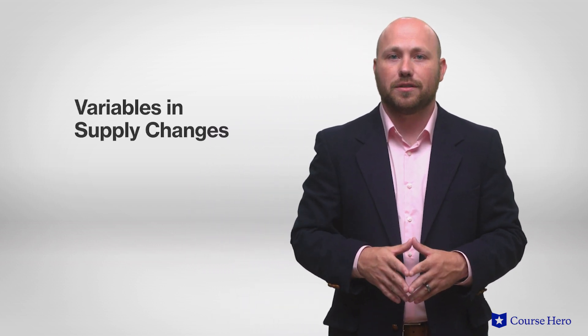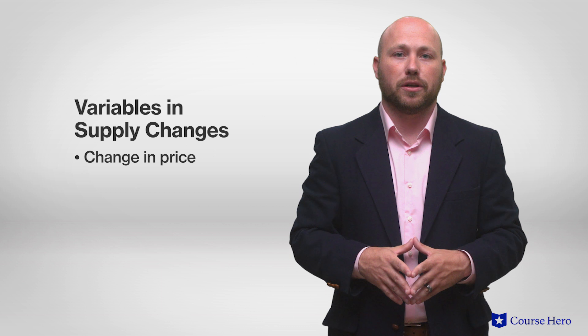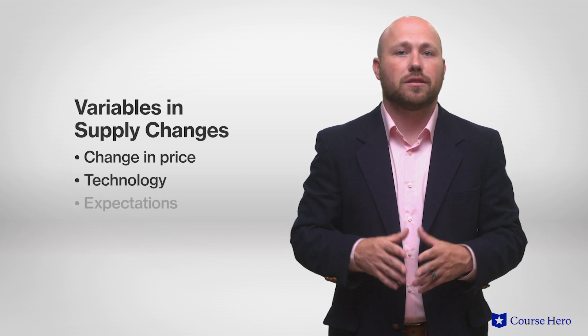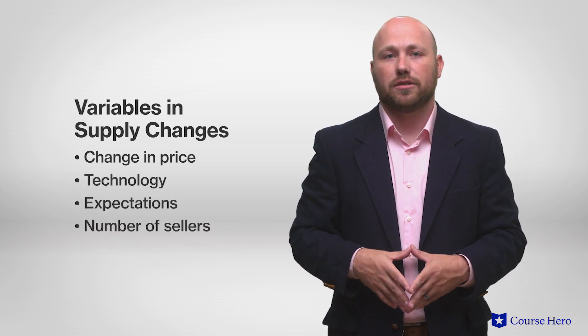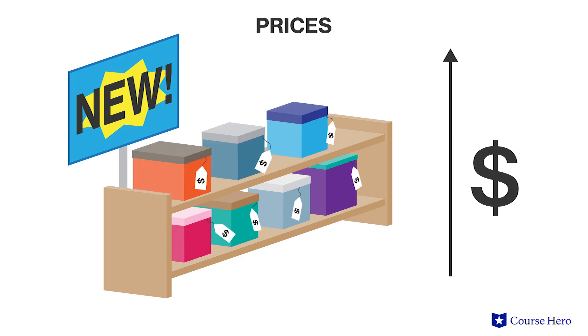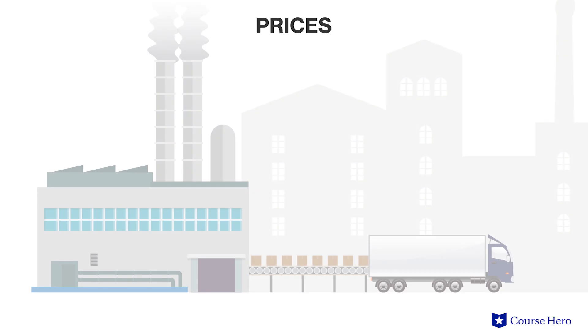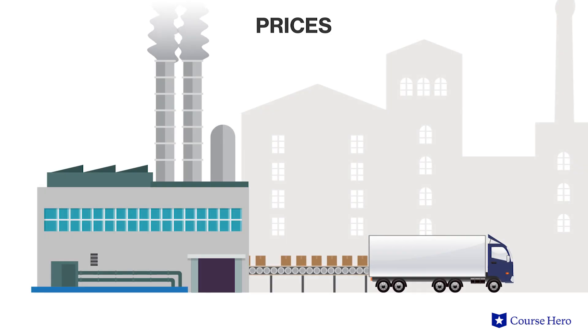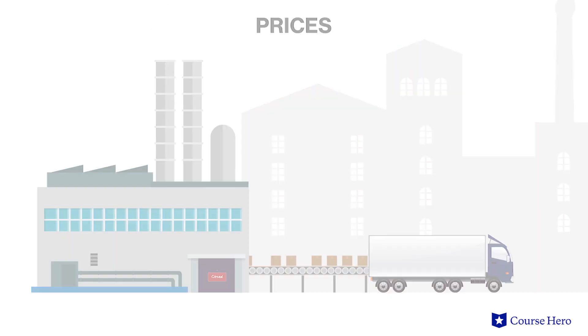Supply can change for a variety of reasons: a change in prices of input goods, technology changes, expectations, or even the number of sellers. Producers in a competitive market sell different quantities at different prices in order to maximize profit. This happens because producers have different costs of production. In general, as prices rise, producers will sell more units because they receive more revenue by doing so. In contrast, if prices fall, producers will sell fewer units and may even shut down, leaving the market entirely. When prices rise again, they may re-enter the market.